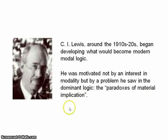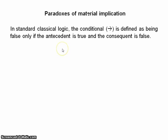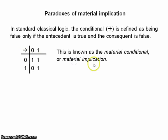And I need to just explain this to explain his motivations there. So, in our standard propositional logic, we define the conditional as being false only if the antecedent is true and the consequent is false. Here's the truth table for the conditional. And this is called the material conditional, or material implication.